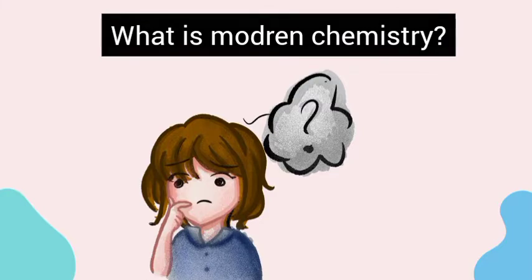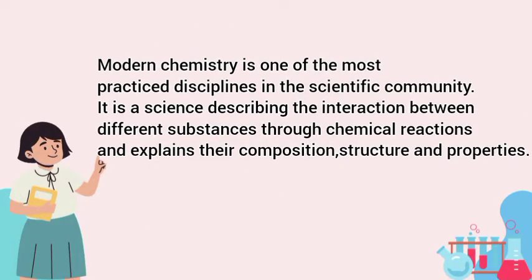First, what is modern chemistry? Modern chemistry is one of the most predictive planets in the scientific community. It is a science describing the interaction between different systems through chemical reaction and explain their composition through a child and real bodies.